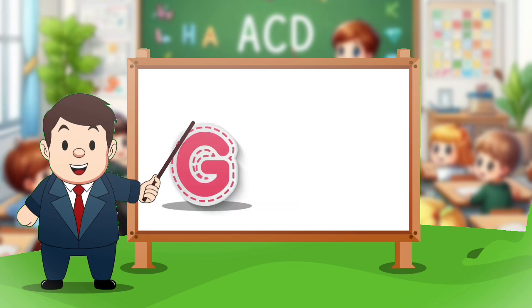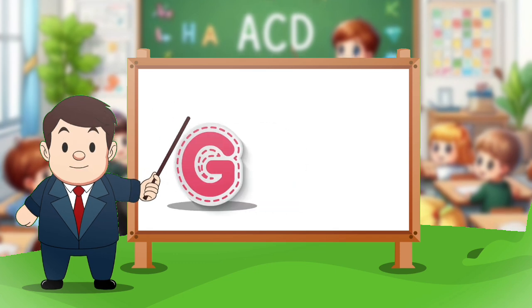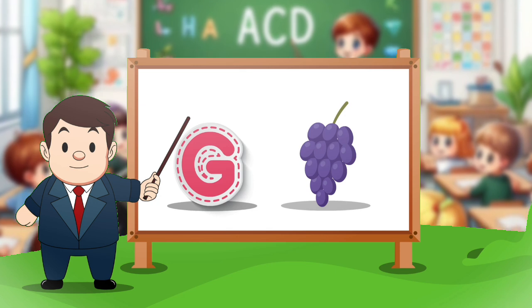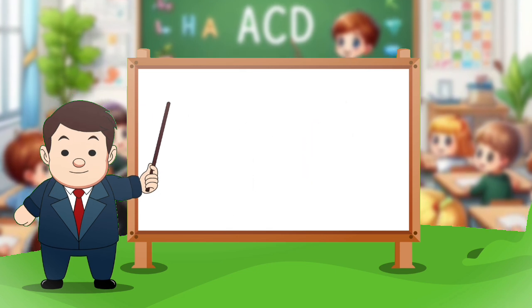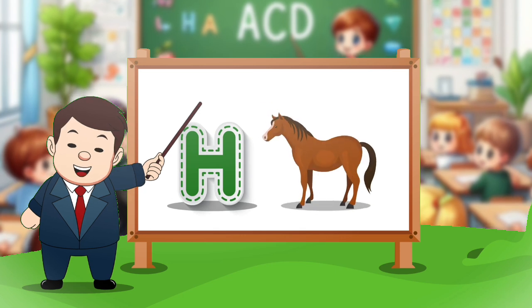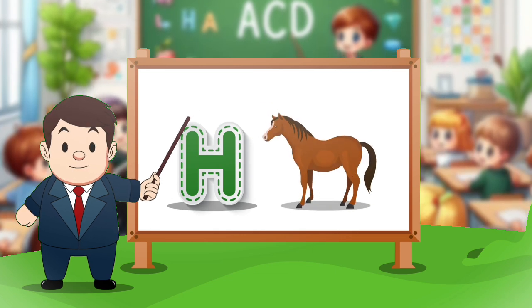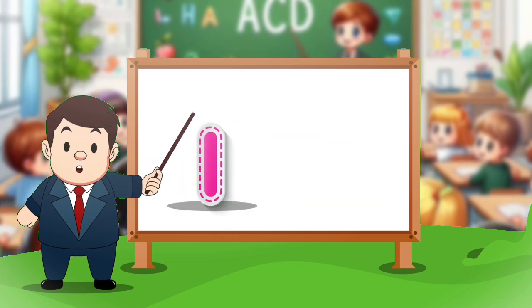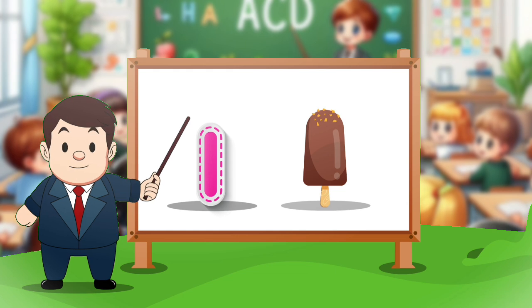G. G for crab. H. H for horse. I. I for ice cream.